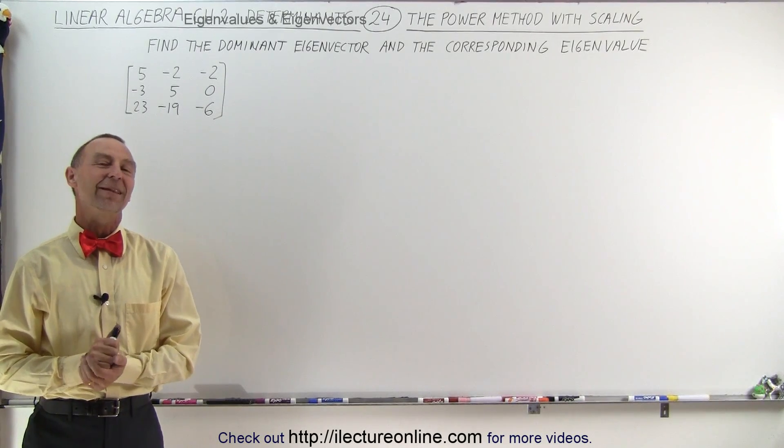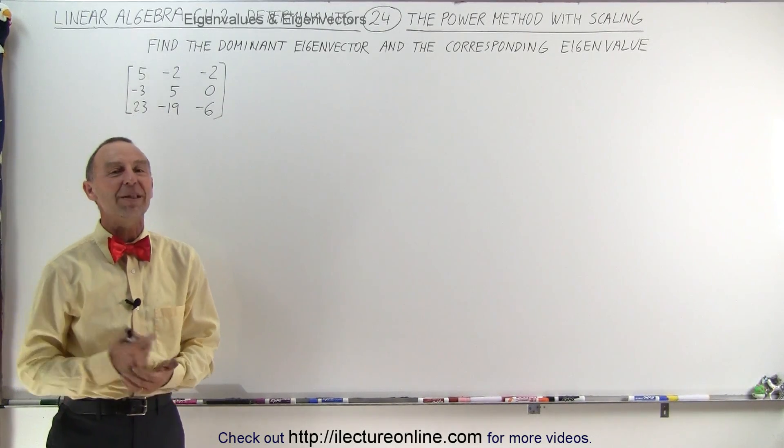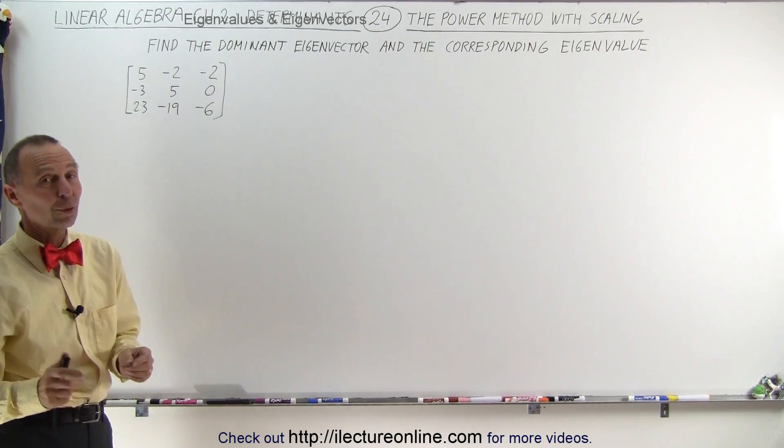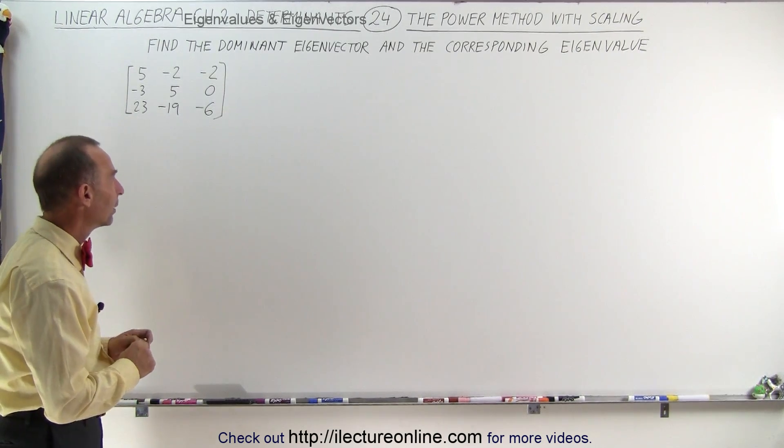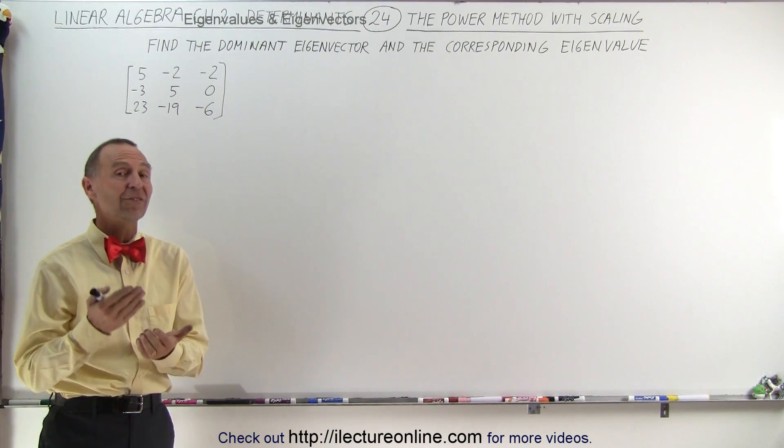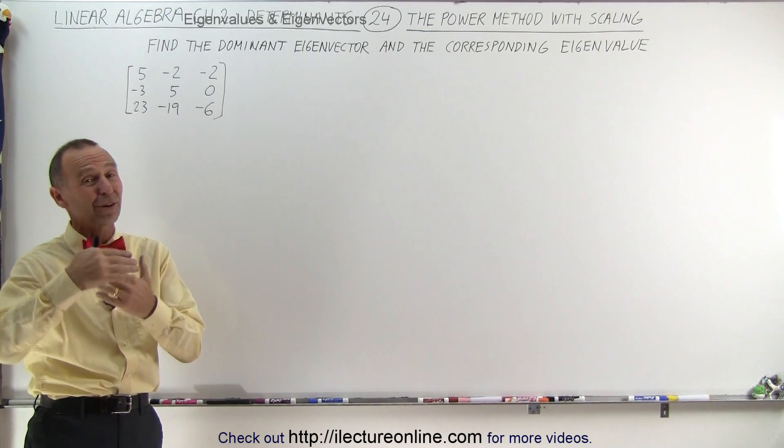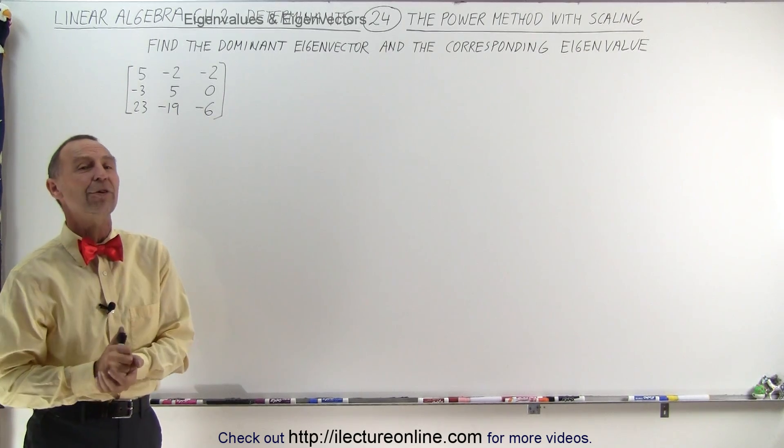Welcome to iLectureLine. Let's try our hand at a 3x3 matrix. We're trying to find the dominant eigenvector and the corresponding eigenvalue. We're going to use scaling because that enables us to see what things converge to when the numbers are large and they don't appear to be converging to anything.